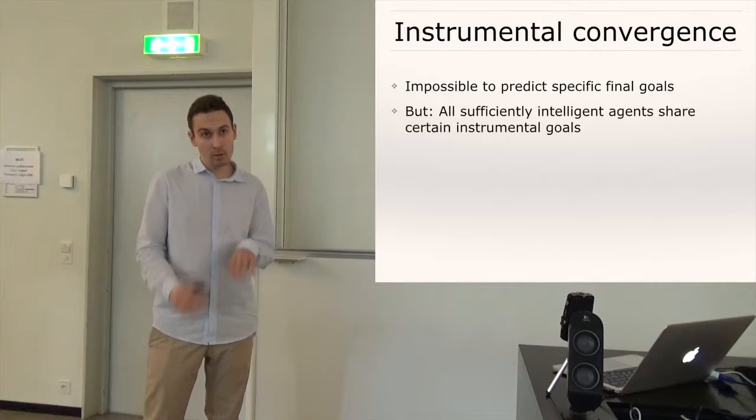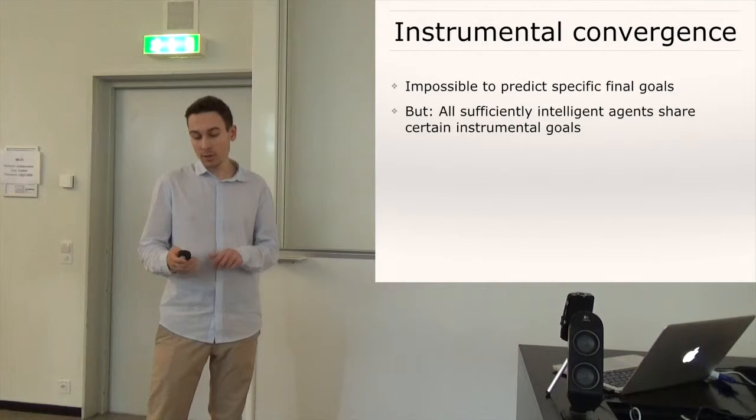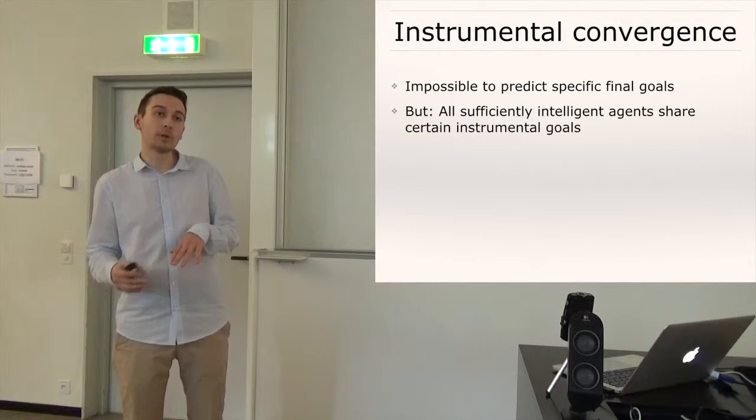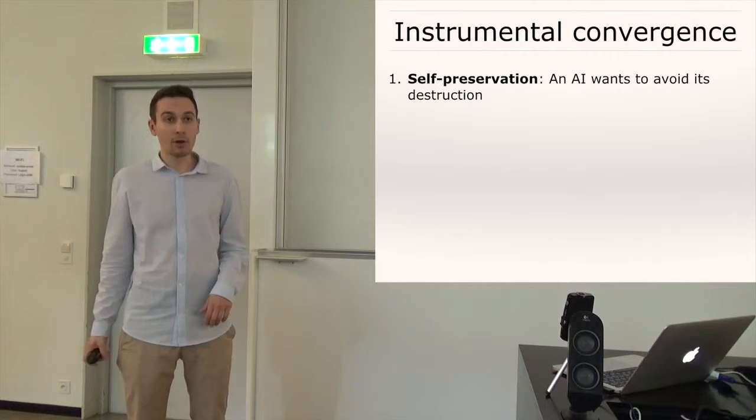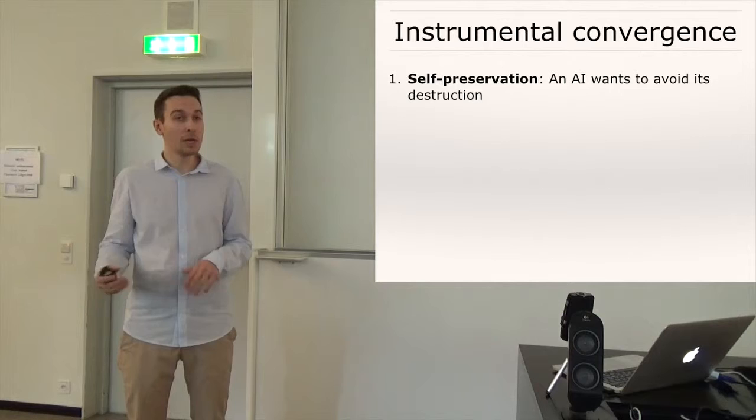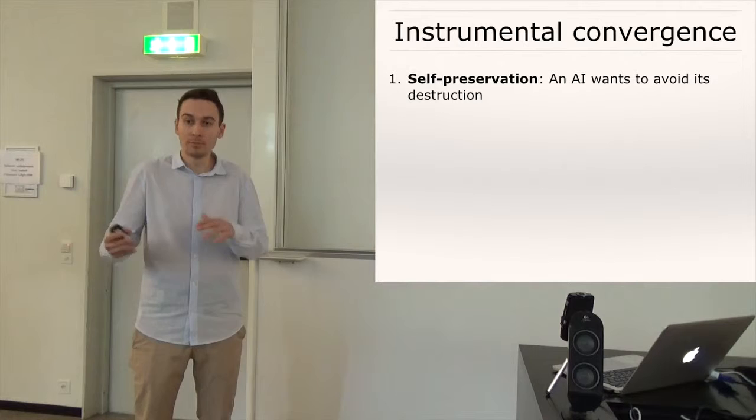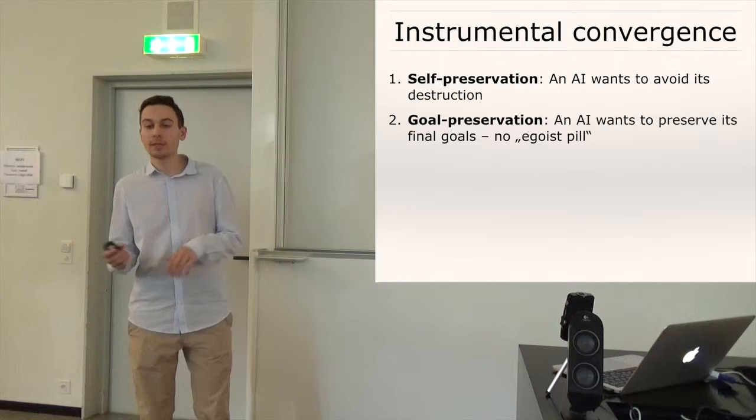but we can predict certain instrumental goals of AIs just because all sufficiently intelligent agents share certain instrumental goals because they are useful for achieving your final goals whatever those final goals are. And there are four of them and the first one is self-preservation and the AI would want to preserve itself just because if it gets destroyed then it can't achieve its goals anymore except build a copy or whatever.